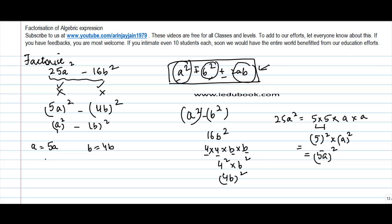Now, a square minus b square, we could have written as what? a plus b into a minus b. Or, I can write this as 5a plus 4b into 5a minus 4b. So, these become the factor of equation.